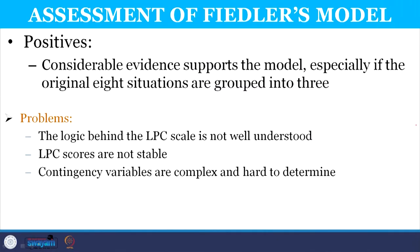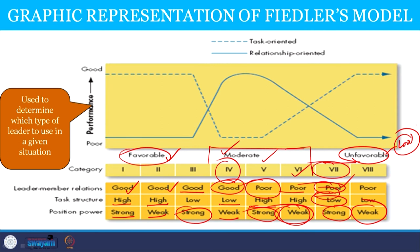Assessment of Fiedler's model: considerable evidence supports the model, especially when the original eight situations are grouped into three. The first three are categorized as favorable situations where performance is likely to be good. Situations four, five, and six are moderate situations where performance will be moderate. The last two situations — seven and eight — are unfavorable, where the leader-member relationship is very weak or poor, and performance is likely to decline and not be effective.